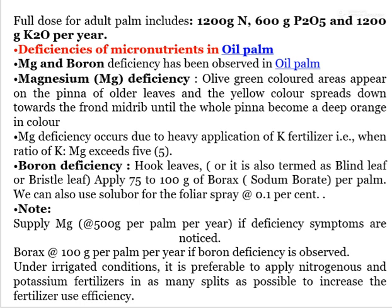Boron deficiency is also termed 'blind leaf' or 'bristle leaf.' To correct it, apply 75–200 g of borax (sodium borate) per palm. Sulphur can also be used as a foliar spray at 0.1%. For micronutrient supply: apply magnesium at 500 g per palm per year if deficiency symptoms are noticed, and borax at 100 g per palm per year if boron deficiency is observed. Under irrigated conditions, it is preferable to apply nitrogen and potassium fertilizer in as many splits as possible to increase fertilizer use efficiency.